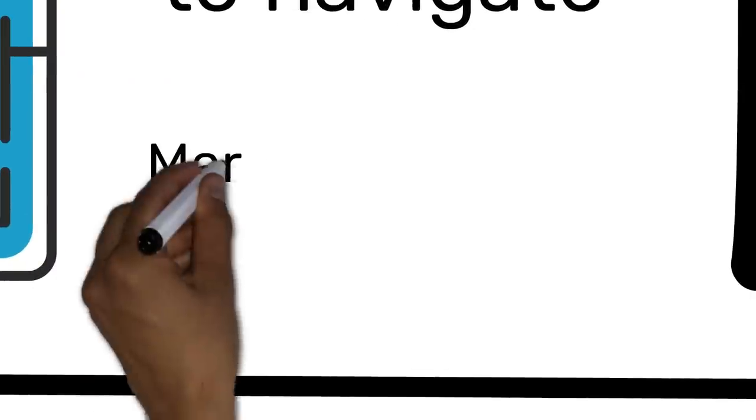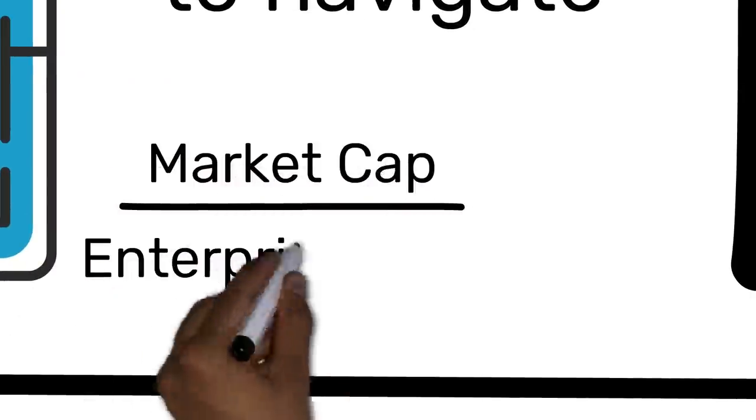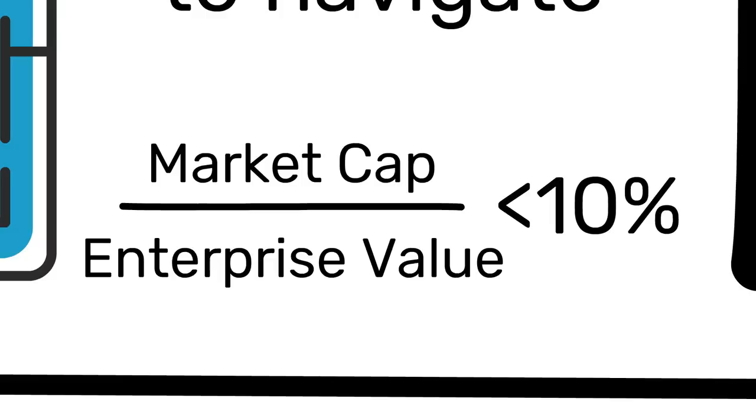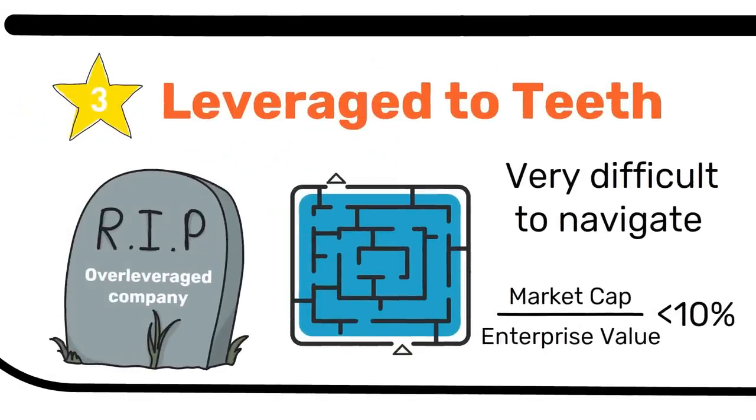The third category may have some merit to it, but it is very tough to navigate. Oftentimes, over-leveraged companies end up in bankruptcy and their shareholders are completely wiped out in favor of the debt holders. However, if you can find a stock where the market cap of the shares is, say, 1 tenth of the total enterprise value, you'll have some nice returns if the total enterprise value would for instance double. Lots and lots of diversification is recommended if you want to try this at home.